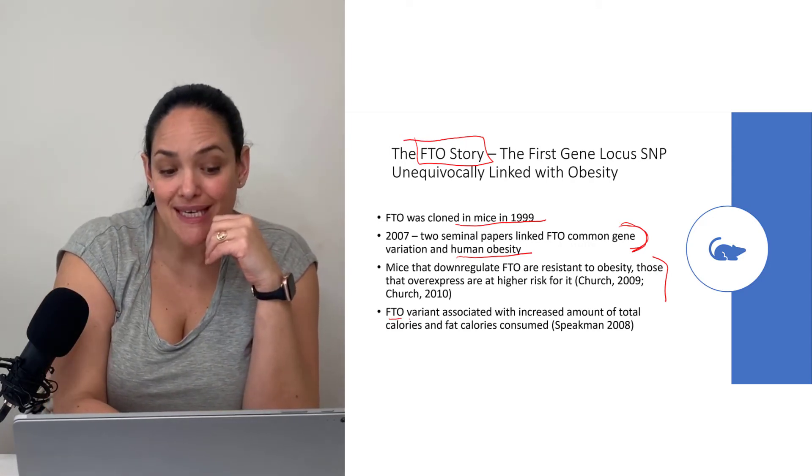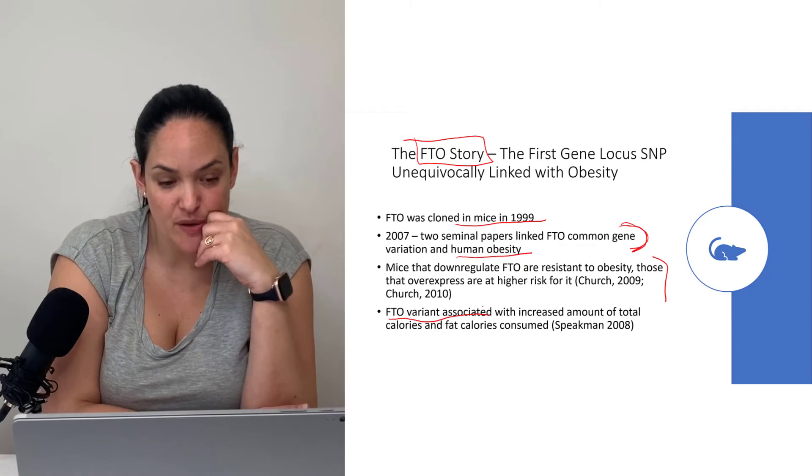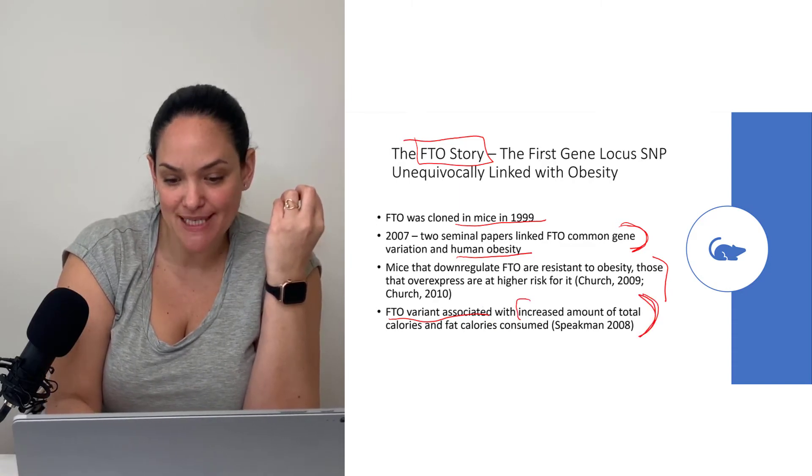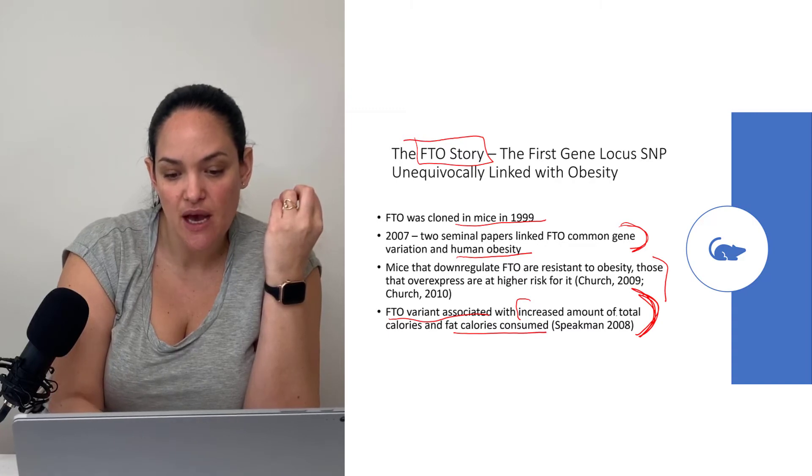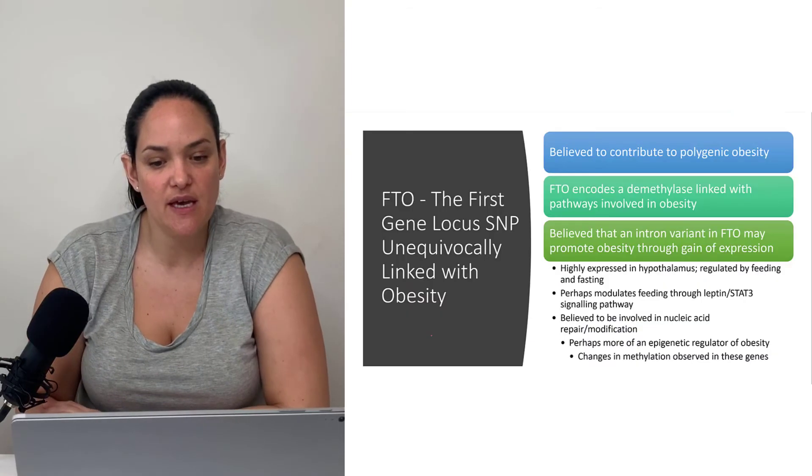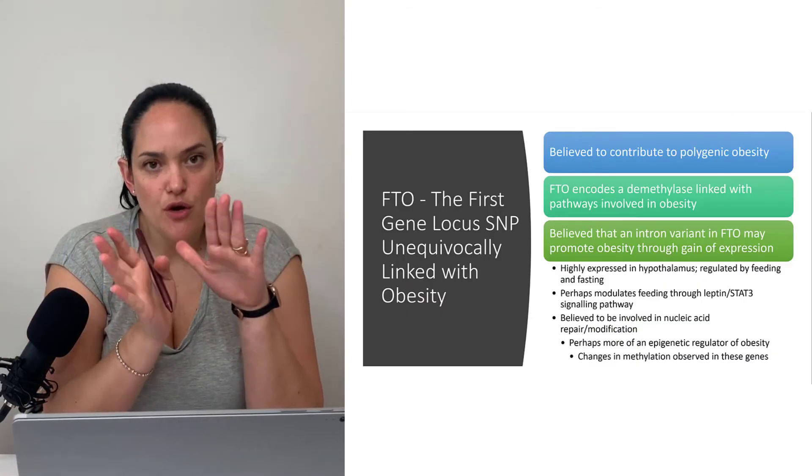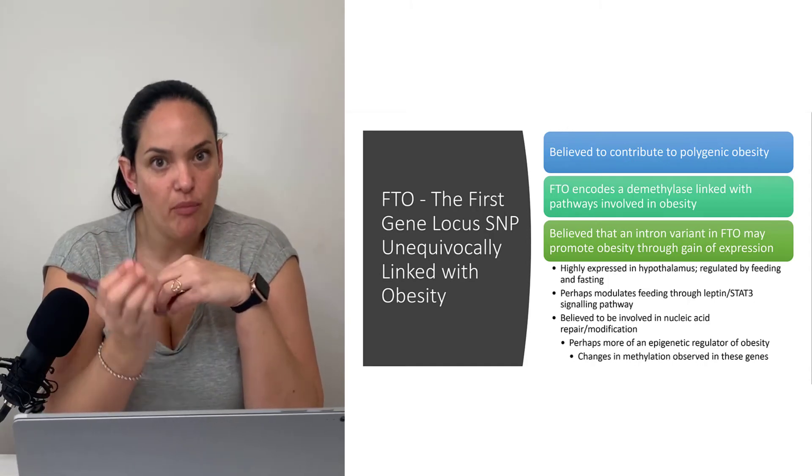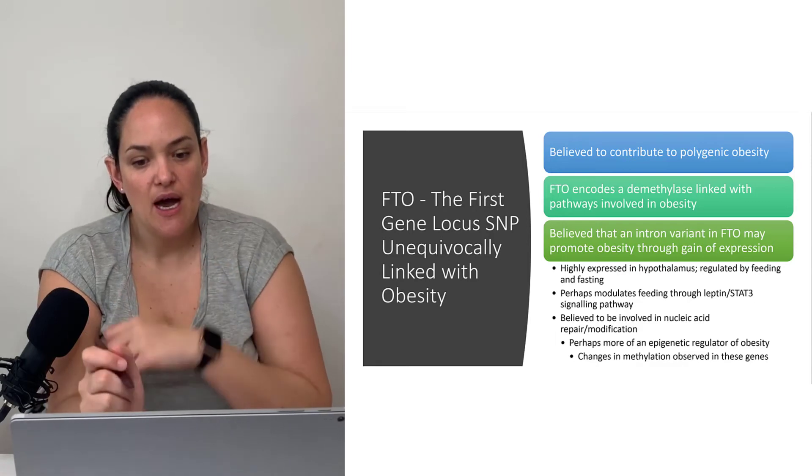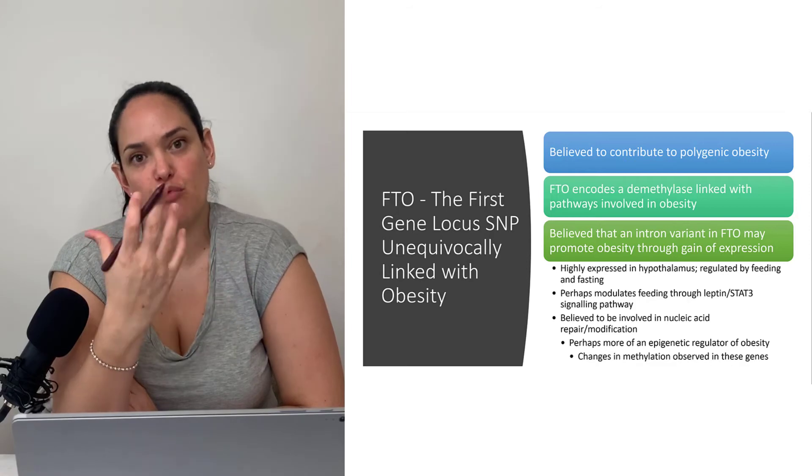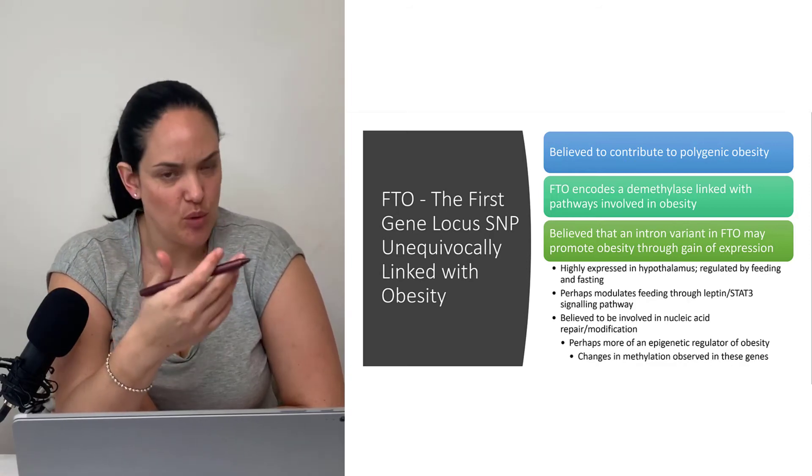Specifically, what was found is that mice that down-regulated FTO were resistant to obesity and those that overexpressed its gene product were at higher risk for it. What is believed is that this FTO variant somehow is affecting appetite, calories consumed, and especially fat calories. FTO is not believed to be a monogenic cause of obesity but is believed to be part of the polygenic origin of obesity because its effect isn't typically as large.